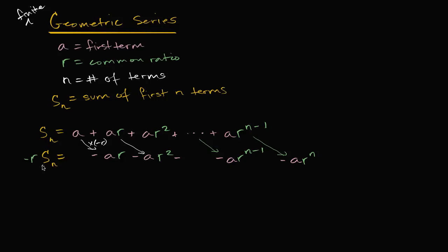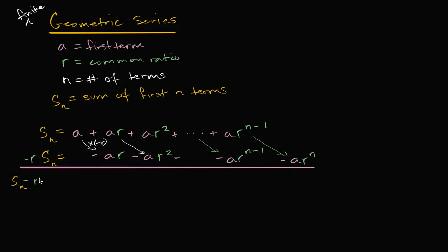Now we can add up the left side and the right hand side. On the left hand side we get S sub N minus R times S sub N. On the right hand side, something very cool happens: the A stays, but everything else in the middle cancels out — these pairs cancel — and all we're left with is A minus A times R to the N.